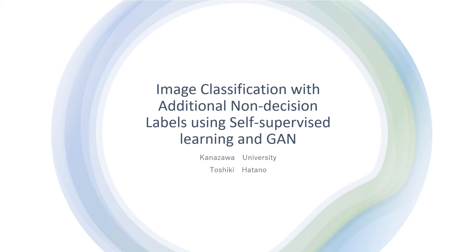Hello, my name is Toshiki Hatano. I am a graduate student from Kansai University. I introduce my research: image classification with additional non-decision levels using self-supervised learning and GANs.